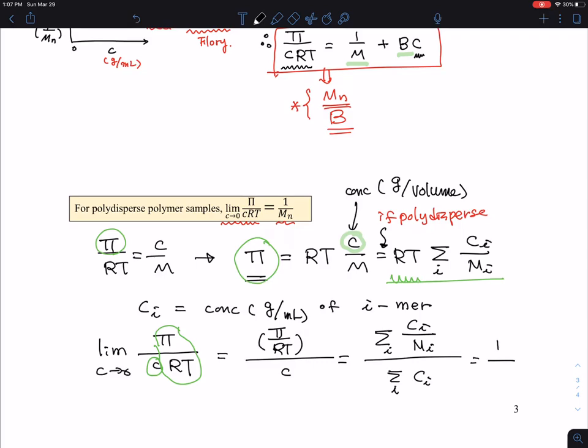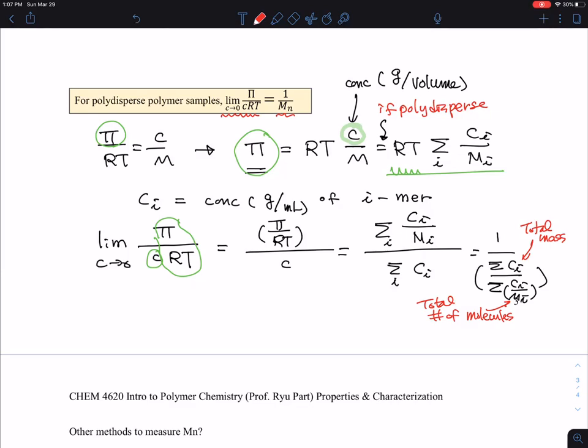If you recall, we're talking about Ci divided by total mass in the top, and Ci/Mi in the bottom - that's total number of molecules. Therefore this term is 1/MN. Here I've shown you that doing the experiment for polydisperse samples, you will end up getting the number average molecular weight.